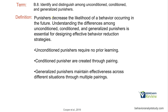Punishers decrease the likelihood of a behavior occurring in the future. Whenever you're dealing with a consequence question or determining consequences in a real-life situation, you're always looking at how that consequence is influencing future behavior. If we have our antecedent, our behavior, and our consequence, that consequence is going to impact what happens to that behavior in the future. If that behavior goes up, we're dealing with reinforcement. If that behavior goes down, it's going to be punishment or extinction. That is set in stone.